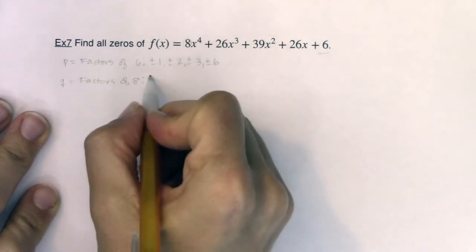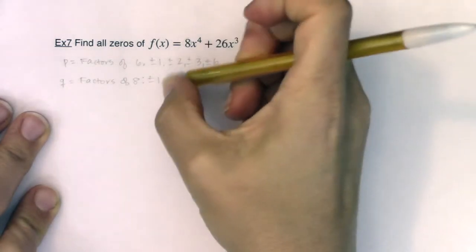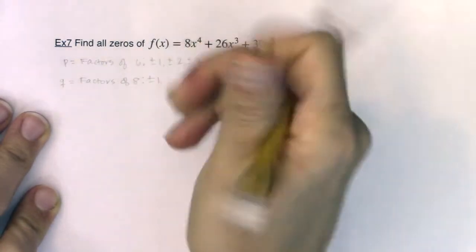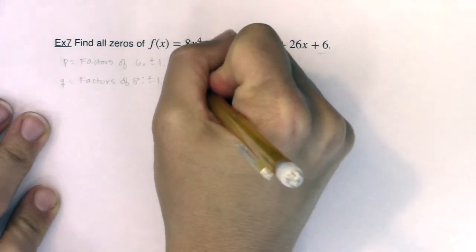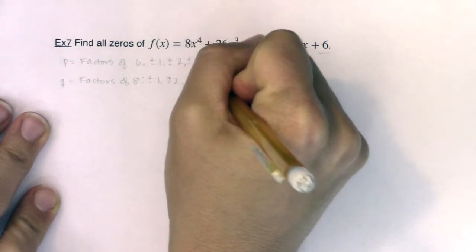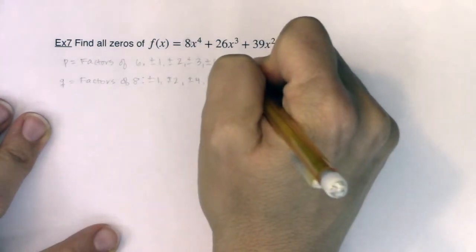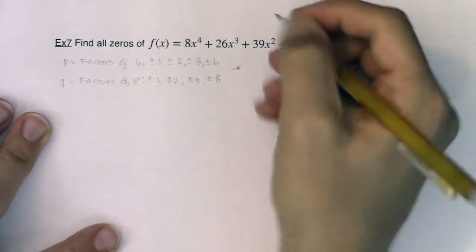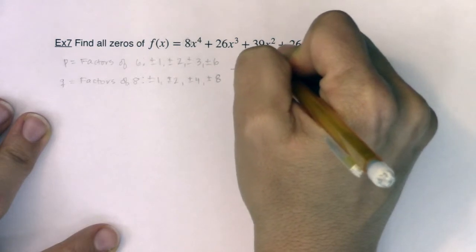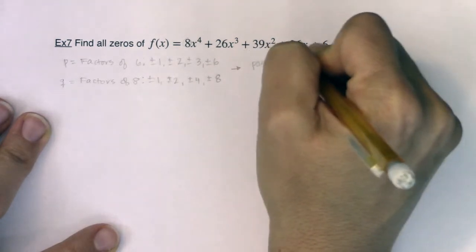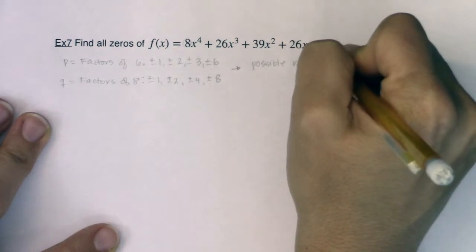So that would be plus or minus one, two, four, and plus or minus eight. And then from there I would make my list of possible rational zeros, and this is going to be a long list.